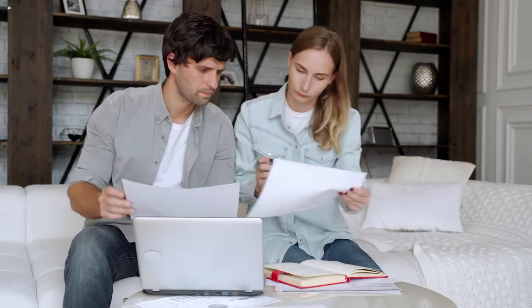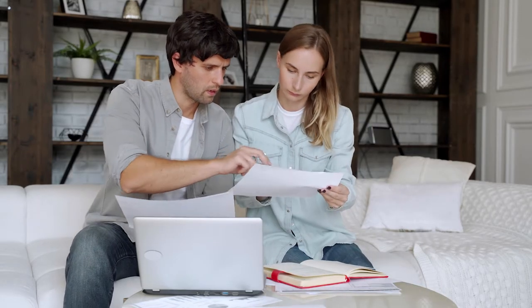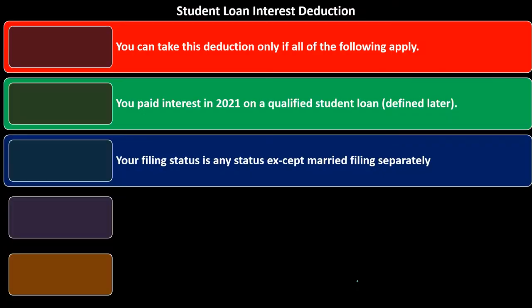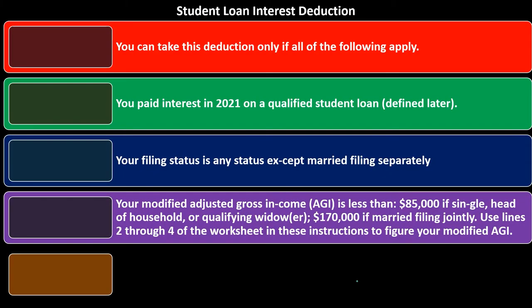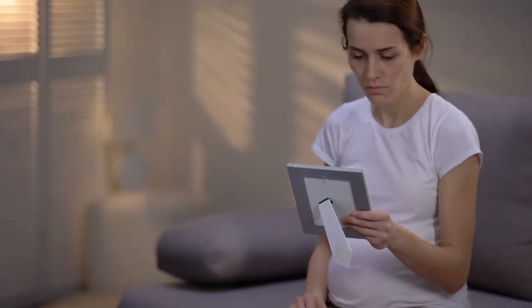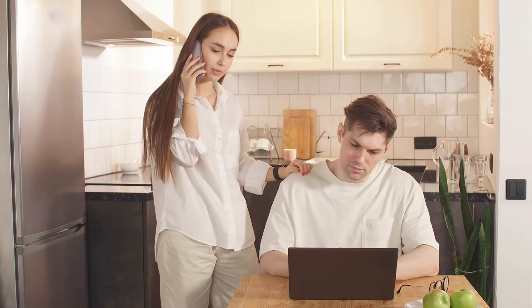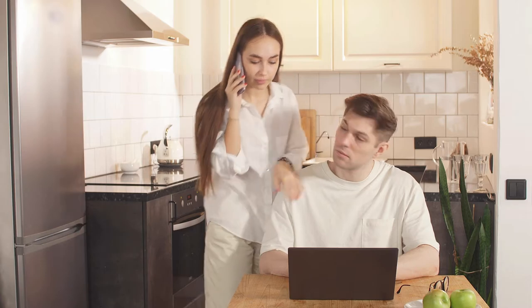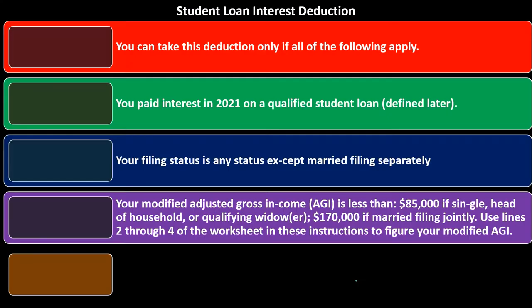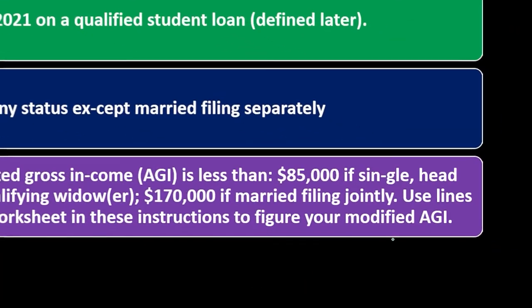Your modified adjusted gross income must be less than $85,000 if single, head of household, or qualifying widow(er), — that's where the income cap begins to phase out the deduction. The threshold is $170,000 if married filing jointly. Use lines 2 through 4 of the worksheet in the instructions to figure your modified AGI.